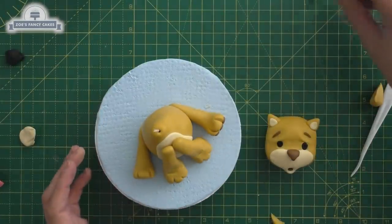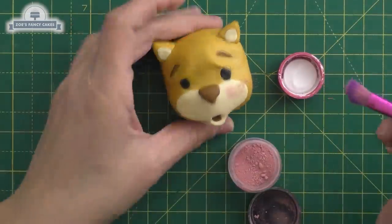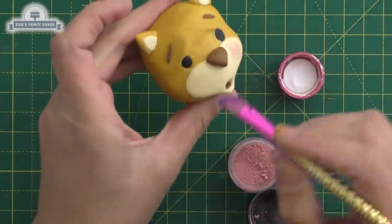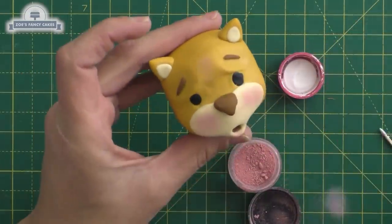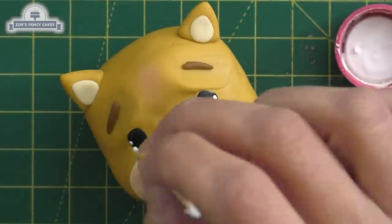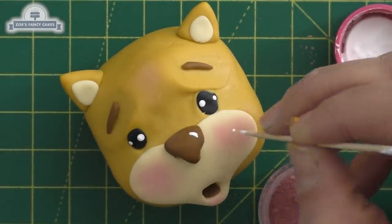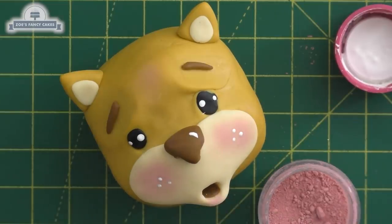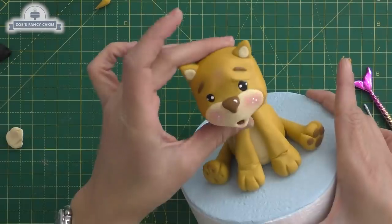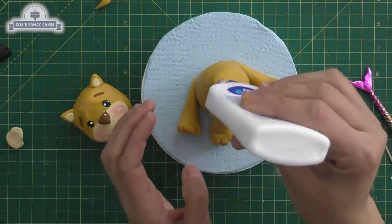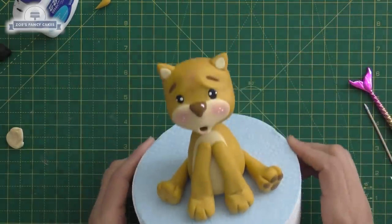Now just before Marisol sticks her head on, she's just going to give it some rosy little cheeks. She's actually using the edible dust even though the paste isn't edible. The dust still does work on the fox paste. And a couple of tiny dots of white color in the eyes and a little bit on the nose. And then three white dots on either cheek. A little bit more glue again just to make sure the head sticks when she adds it. Pushing that down on the cocktail stick.